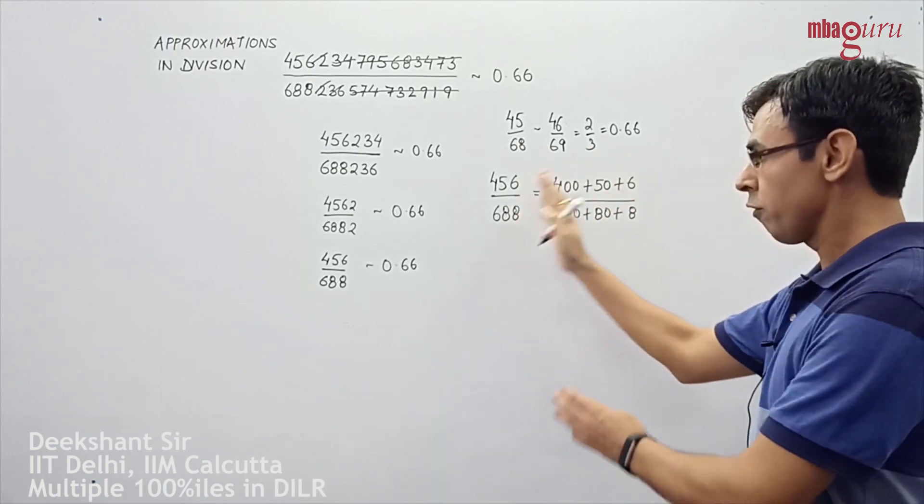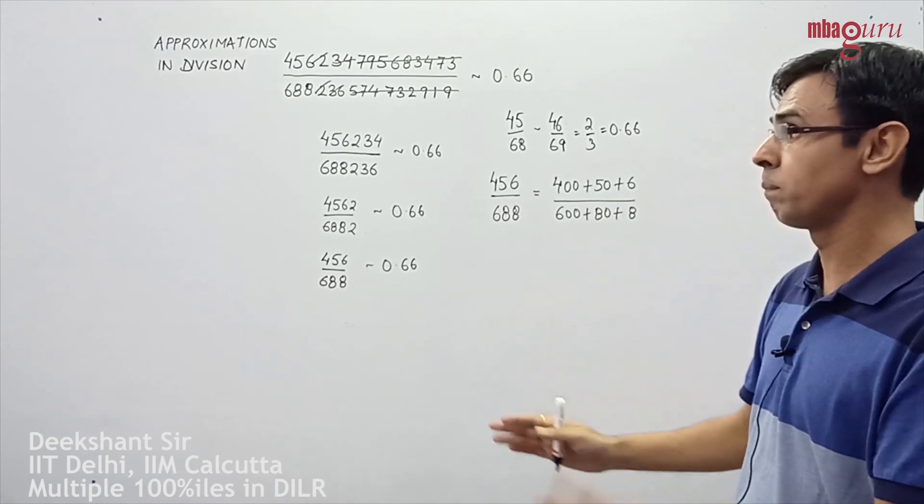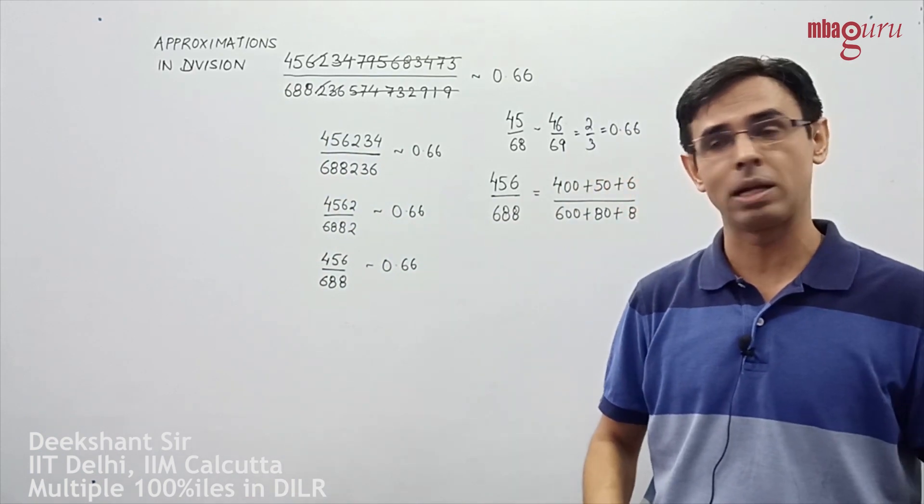So the more removed to the right, the less the contribution of those numbers. So the most significant numbers in division are to the leftmost side in the numerator and the denominator.